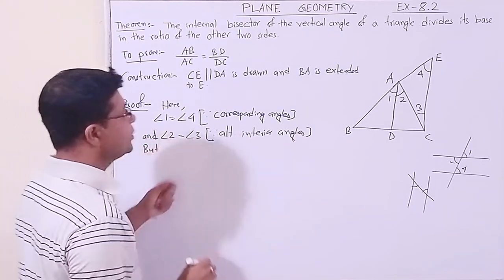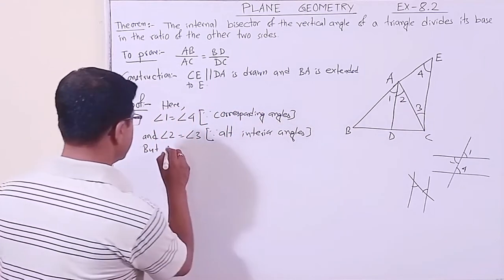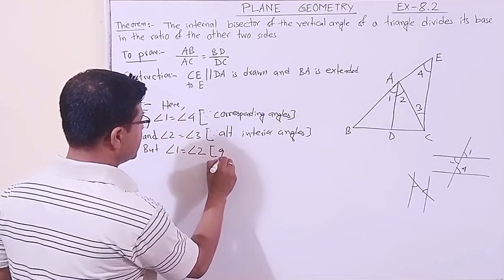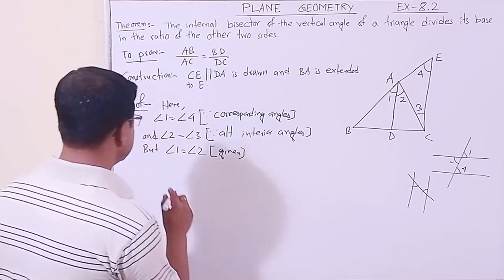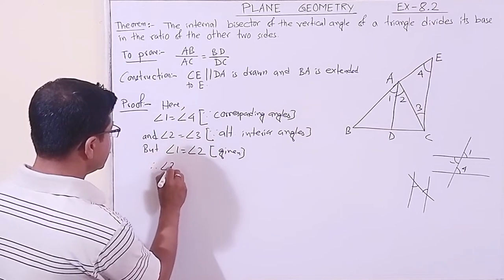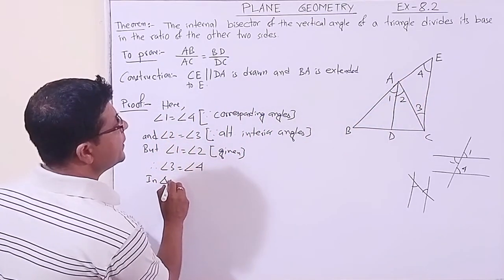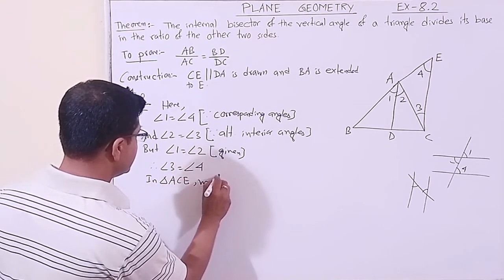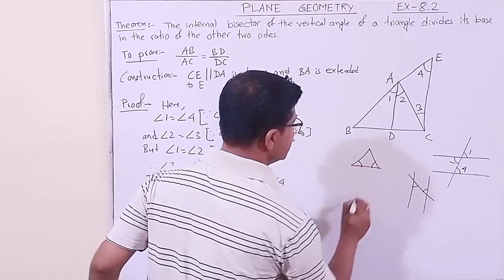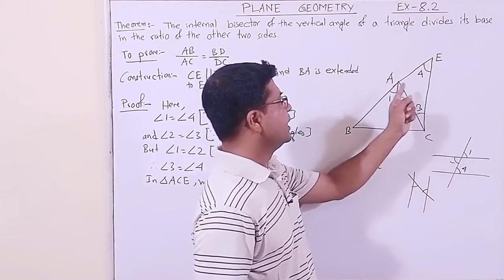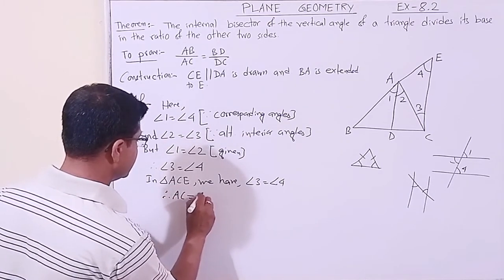What is given? AD is the internal bisector, so angle 1 equals angle 2 — given. In geometry, every step must have a logical reason. Therefore, since angle 1 equals angle 2, we get angle 3 equals angle 4. In triangle ACE, angle 3 equals angle 4, so their opposite sides are equal: AC equals AE.